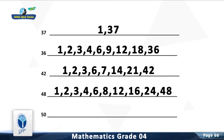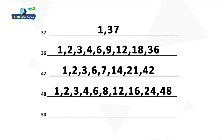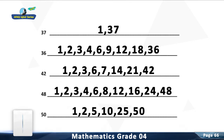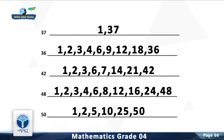Question 10: Write all the factors of 50. You are right. The factors of 50 are 1, 2, 5, 10, 25, and 50. You have done a good job.